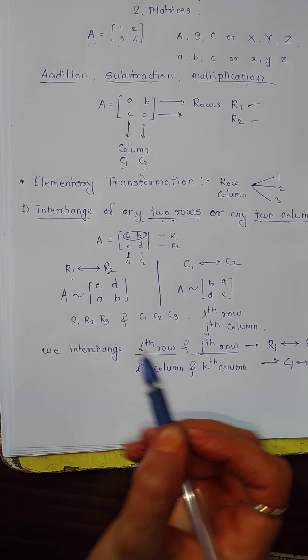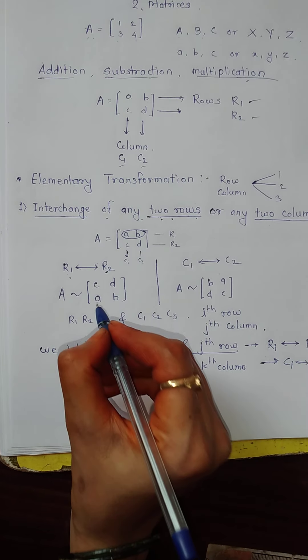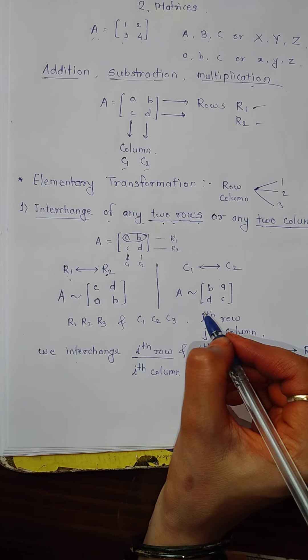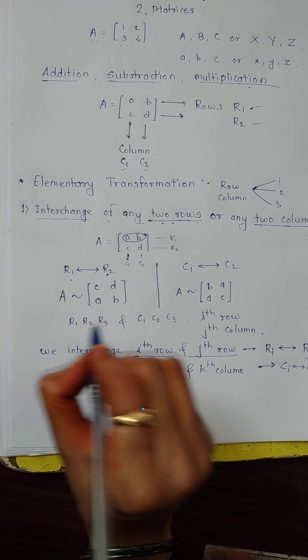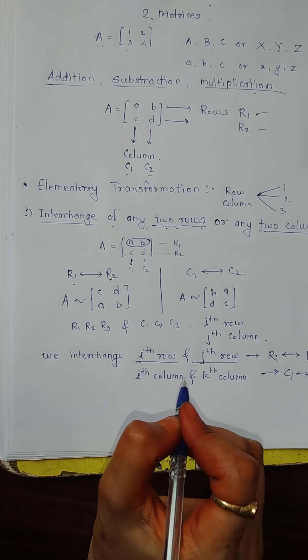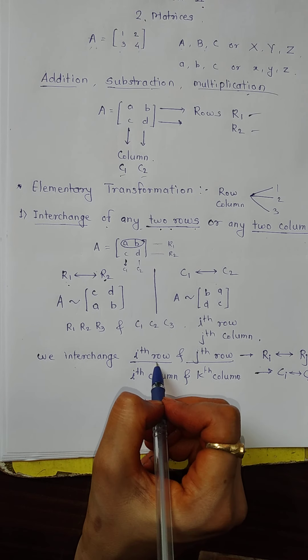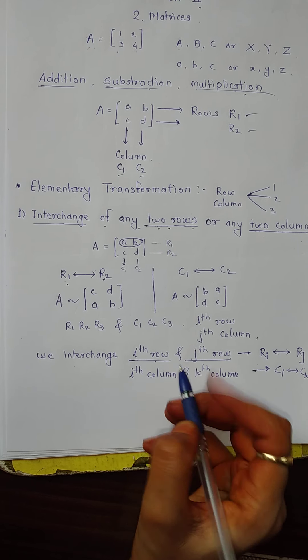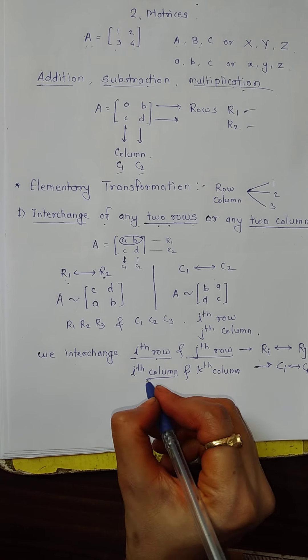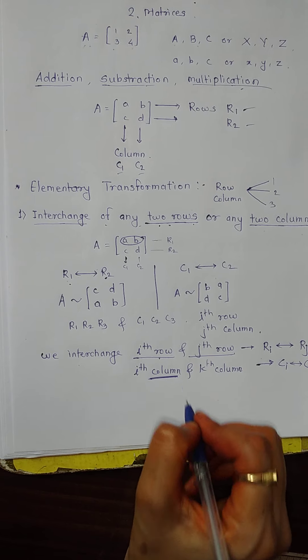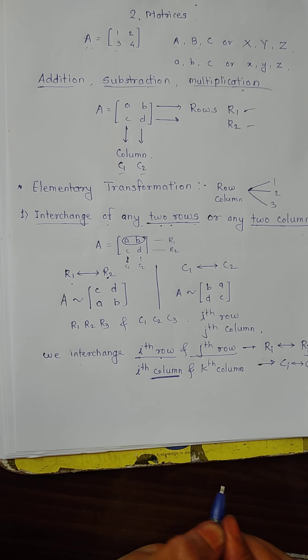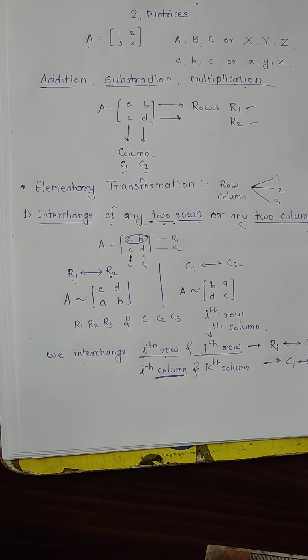The row and column can still be interchanged. The notation specifies which row or column is being interchanged. Ci interchange Ck denotes which columns are interchanged.